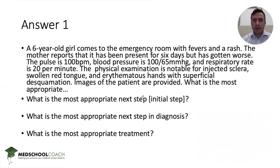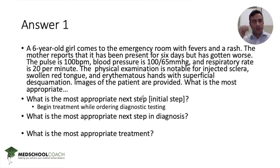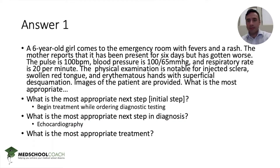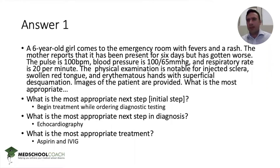It's important to know that Kawasaki disease is diagnosed clinically. So before anything else, you begin treatment. After treatment is initiated, the most appropriate next step in diagnosis is echocardiography. All of the morbidity and mortality associated with this disease is from coronary aneurysms, which can be seen on echocardiography. The most appropriate treatment is a combination of aspirin and IVIG — one of the few instances where aspirin is given to pediatric patients, because the risk of Reye's syndrome is outweighed by the benefit of decreasing risk of coronary artery damage and myocardial infarctions.